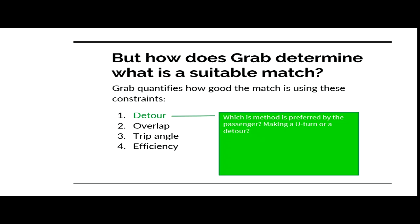Because by making a U-turn, customers will think, 'Hey, you're wasting my time, I shouldn't be taking this GrabShare at all.' That's the reason why they prefer a detour method rather than a U-turn method.